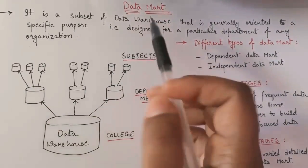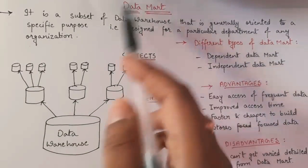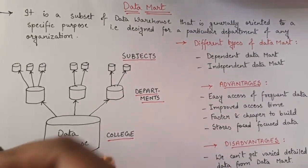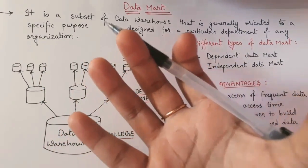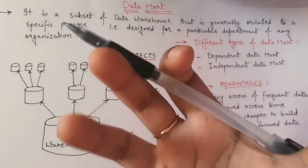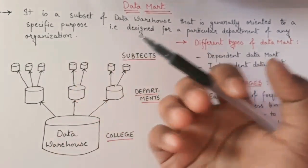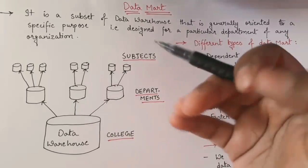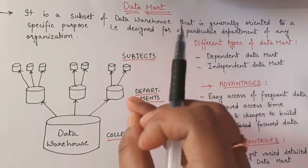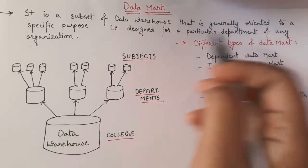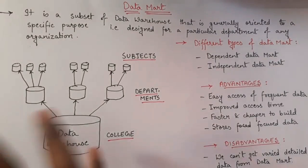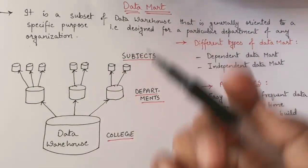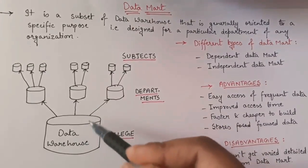The specialty of data mart is that the data in it is oriented to a specific purpose. Data mart is designed for a particular department of any organization. If the data warehouse contains all the data of the organization, its subset — the data mart — will contain only the information related to any particular department.